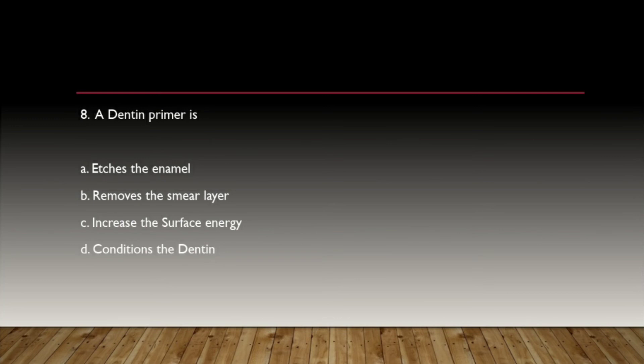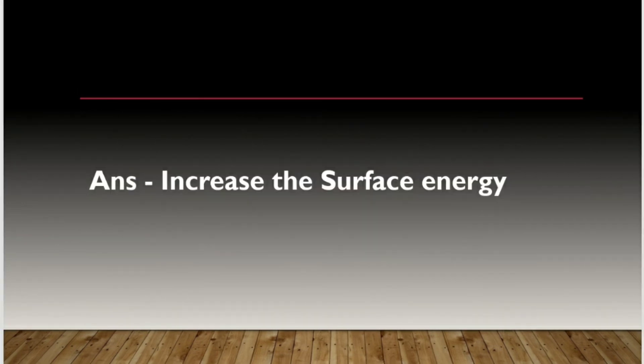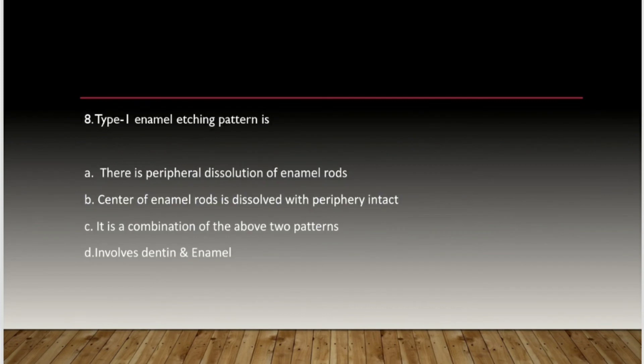What does acid etching do? The options are: removes the smear layer, increases the surface energy, or conditions the dentin. The correct answer is: increases the surface energy.